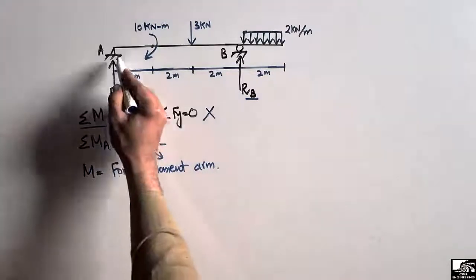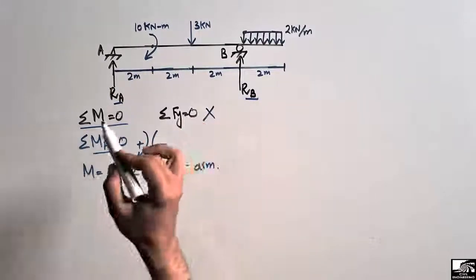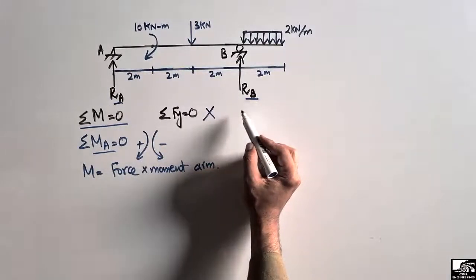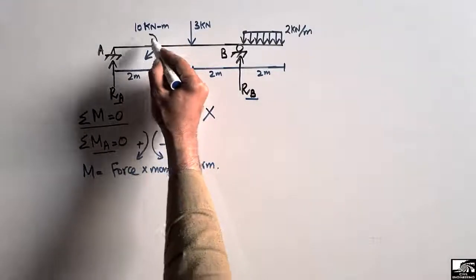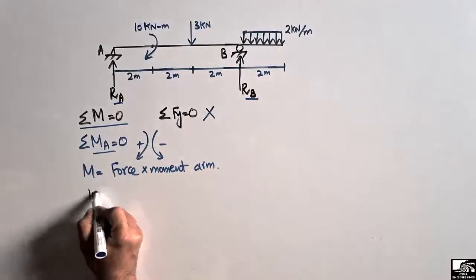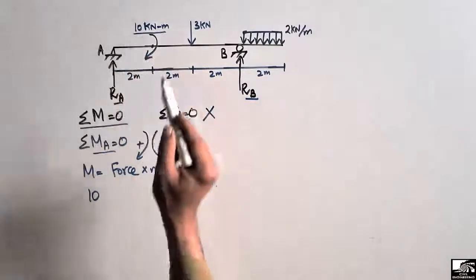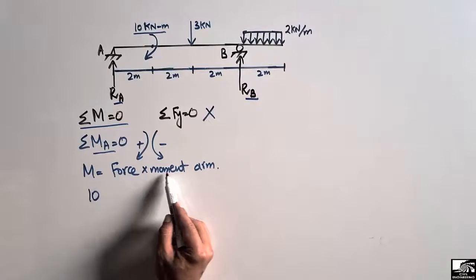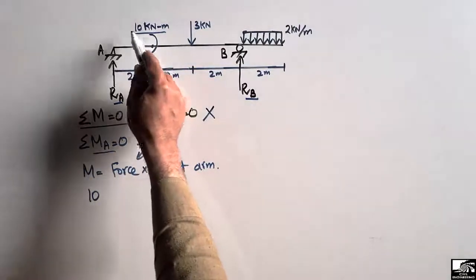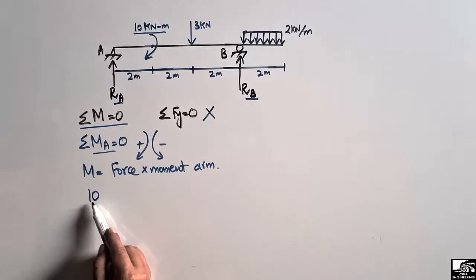In the summation of moments at point A, the first term is the 10 kilonewton-meter moment. It acts in the clockwise direction, so it is positive. Since this is already a direct moment (not a force times distance), we directly write +10 kilonewton-meter.